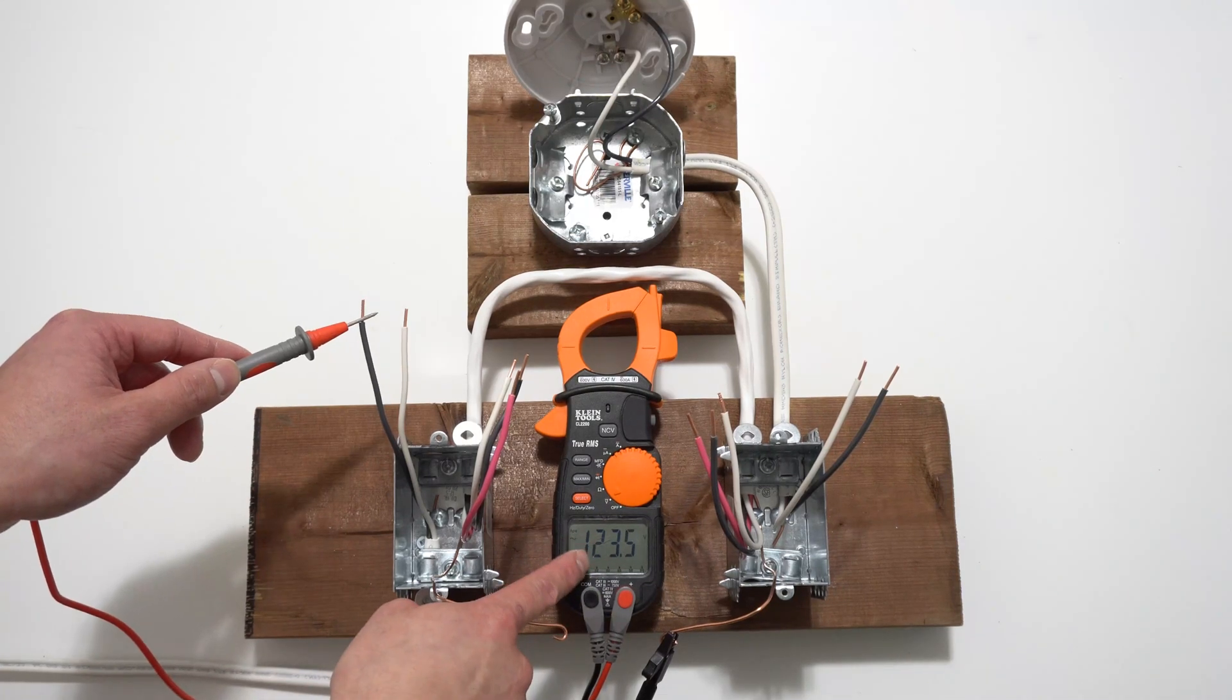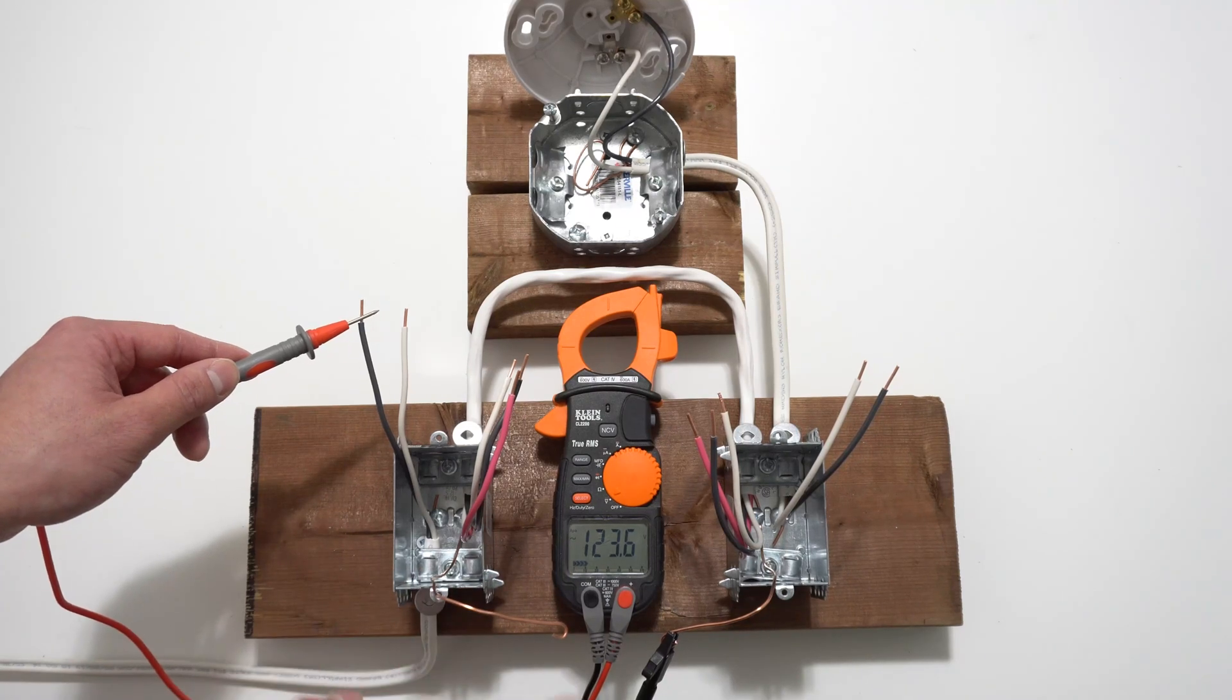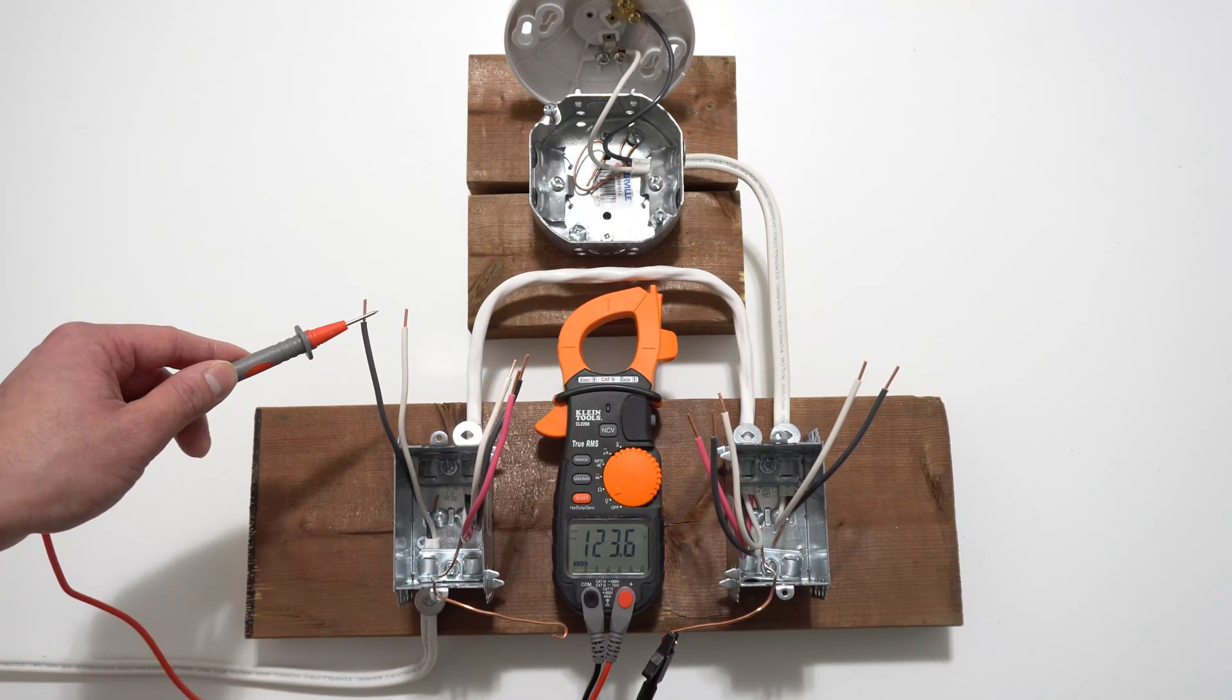And here we have, touching the last wire, we have a potential difference of 123. So the circuit is still live. So you want to double check the circuit breaker and turn off the right one.